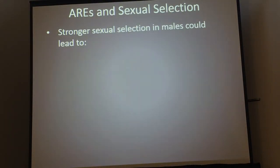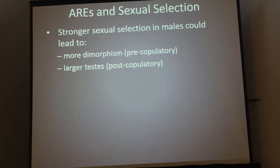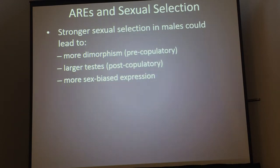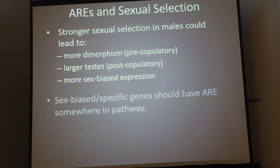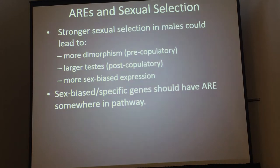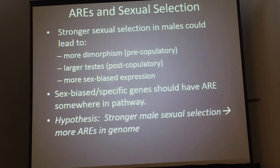How does this tie back to sexual selection? We know stronger sexual selection in males can lead to more dimorphism, which is an example of pre-copulatory selection; larger testes sizes, which is an example of post-copulatory selection; and sex-biased expression. When I talk about sex-biased expression, I mean the organism's entire life — for example, tooth size is often different between males and females, and males are not constantly expressing tooth-growing genes, so this had to happen during maturation. Sex-biased and sex-specific genes probably have an androgen response element somewhere in the pathway if it's going to be a male-dominated trait. My hypothesis is that the stronger sexual selection is on males, the more genes involved, and possibly more response elements controlling those genes to generate male-specific signals.